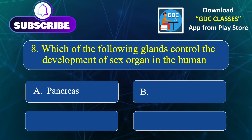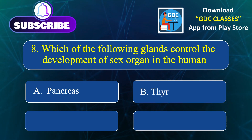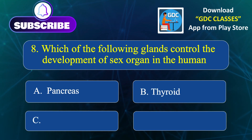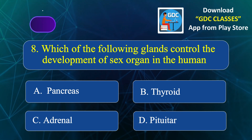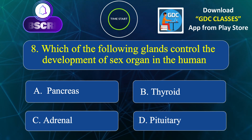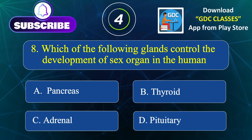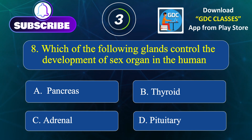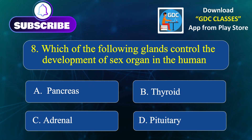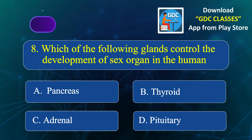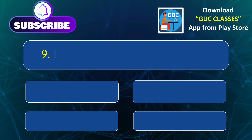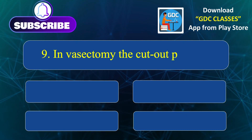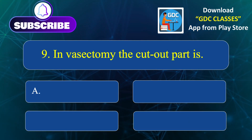Which of the following glands controls the development of sex organs in humans? Option A. Pancreas, Option B. Thyroid, Option C. Adrenal, Option D. Pituitary. Correct answer is Option D: Pituitary.